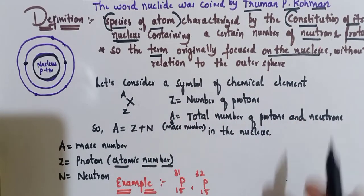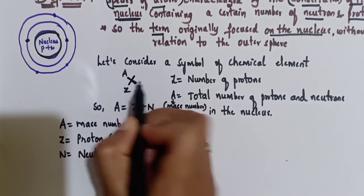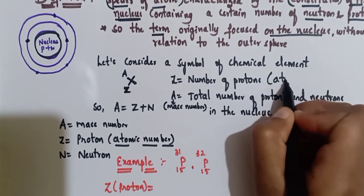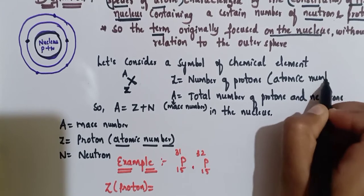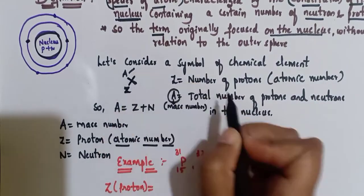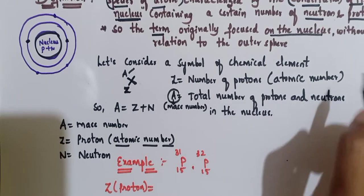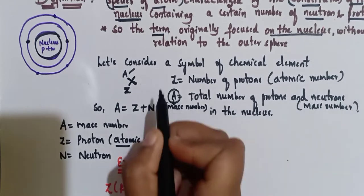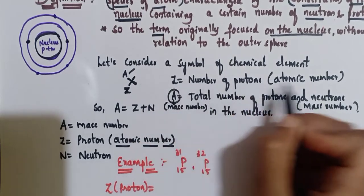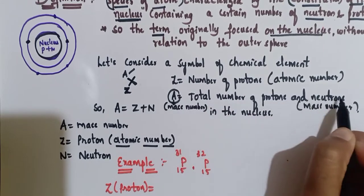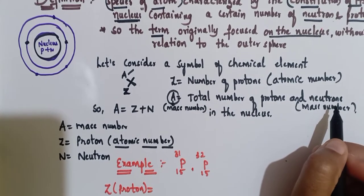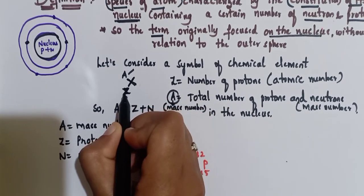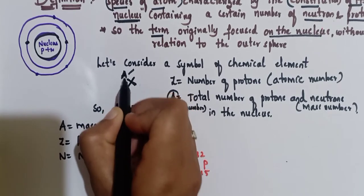Now let's consider the symbol of a chemical element. Here we have X, with Z and A. Z represents the number of protons, or it is the atomic number, whereas A represents the total number of protons and neutrons — we can call it the mass number. So Z is the atomic number and A is the mass number.